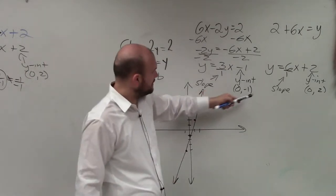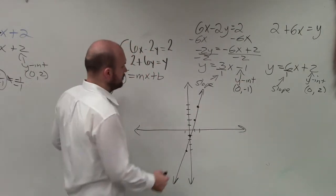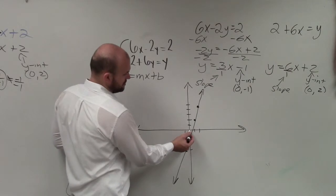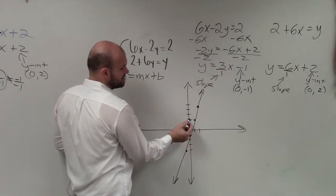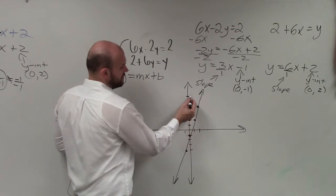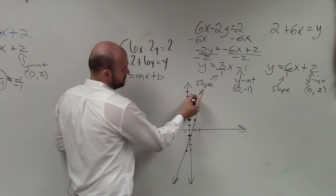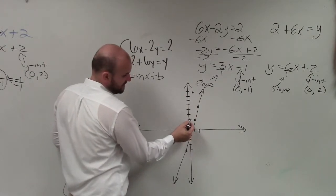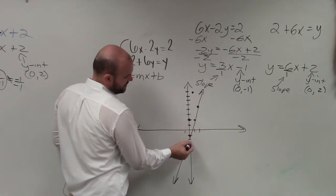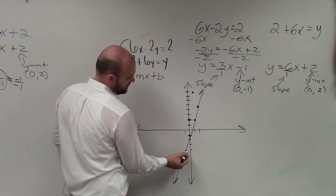Now let's go ahead and graph the next one, which has a y-coordinate of 2. So up 2. And then this slope is change in y is up 6: 1, 2, 3, 4, 5, 6, over 1. Then I go down 6 over 1: 1, 2, 3, 4, 5, 6, to the left one.